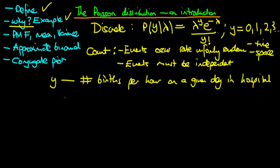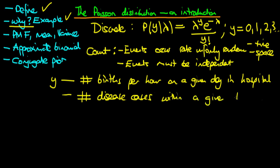An example of events occurring uniformly through space: imagine y measures the count of disease cases for a particular disease within a given town. We imagine looking at different towns and assuming they have the same population, so the mean number of disease cases occurring within a year is the same independent of the particular town. There are no systematic differences between towns, and hence the count of disease cases might adequately be modelled by a Poisson distribution.